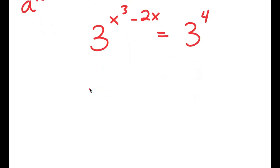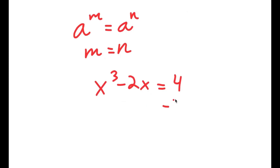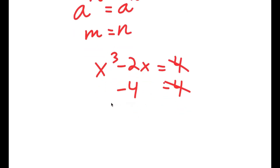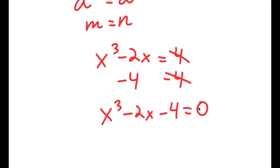Now, if I have something in the form a to the power of m is equal to a to the power of n, this means that m is equal to n. So x to the power of 3 minus 2x is equal to 4. And if I subtract 4 on both sides, I get x to the power of 3 minus 2x minus 4 is equal to 0.